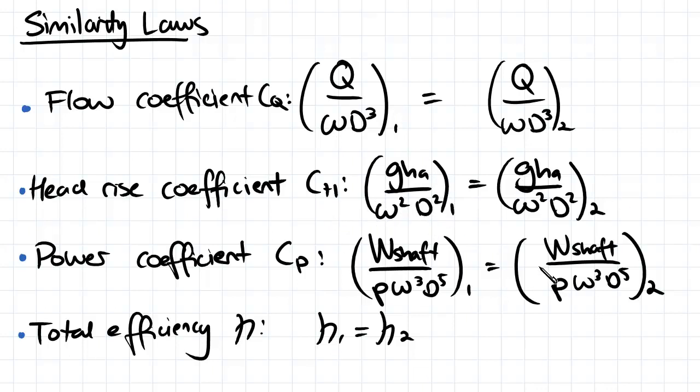We've also got our power coefficient, which is the power in our shaft divided by density divided by angular velocity cubed divided by our diameter to the power of 5. And we've also got the total efficiency remains constant between a model and a prototype.